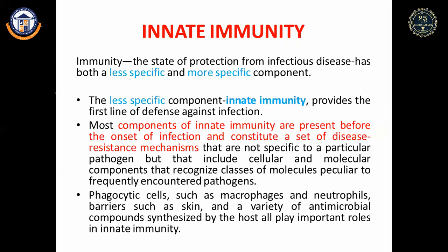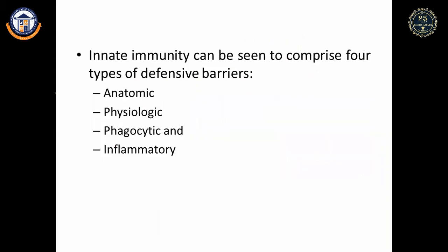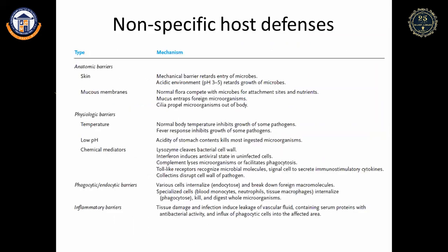Phagocytic cells such as macrophages and neutrophils, and barriers such as skin, are the innate components present against foreign antigens. Innate immunity comprises four types of defensive barriers: anatomic, physiologic, phagocytic, and inflammatory. In the anatomic barrier, two types exist: skin and mucous membranes.